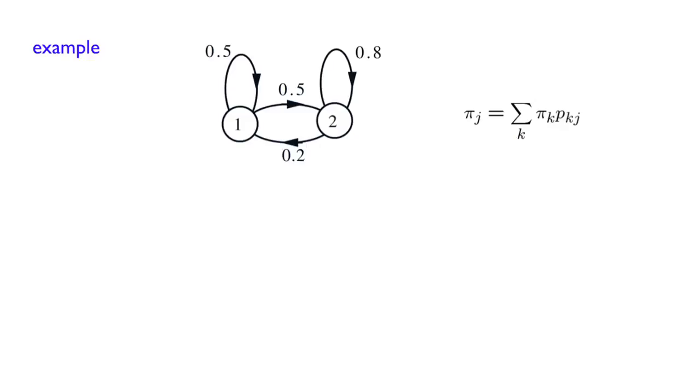All right, so let us revisit the example from last lecture. We have a Markov chain with two states, 1 and 2. This Markov chain has a single recurrent class. And it's not periodic, because we have self-transition of this type. So as a result, this is well-defined.